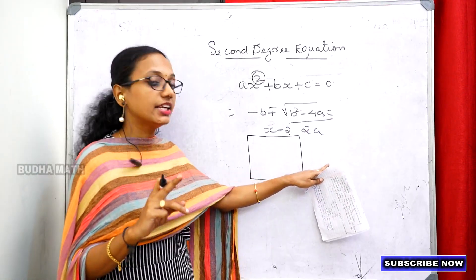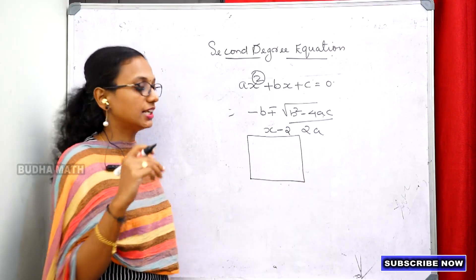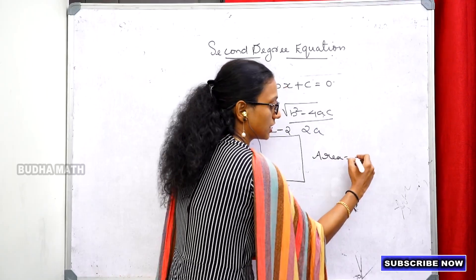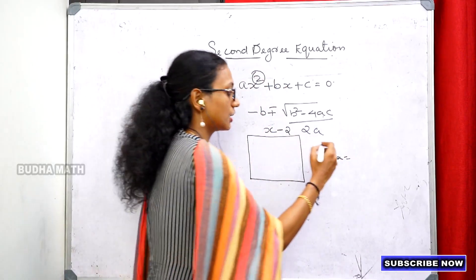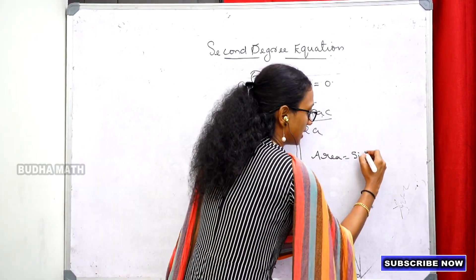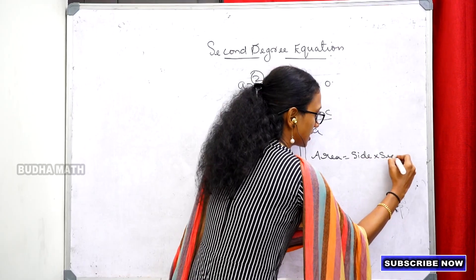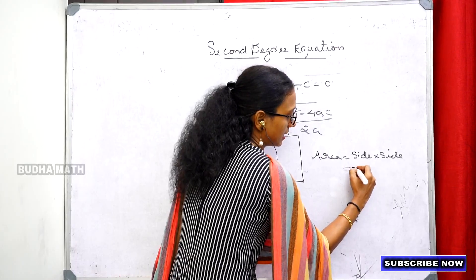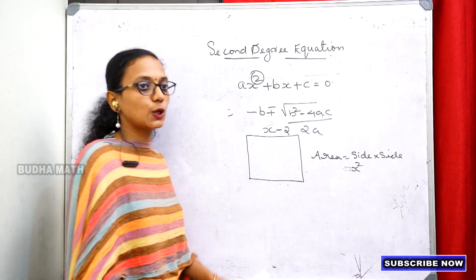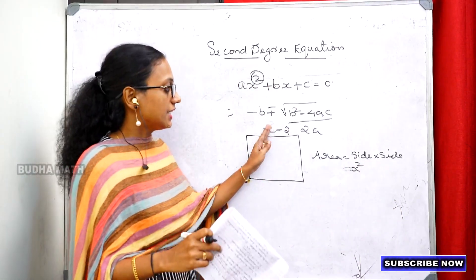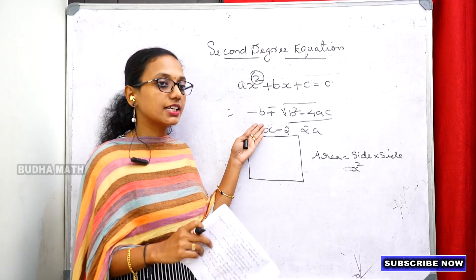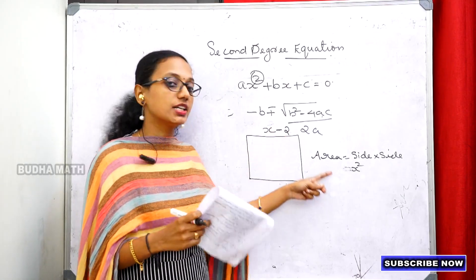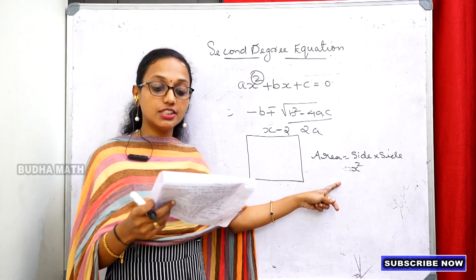The area of a square is side times side. So x minus 2 times x minus 2 equals 49. That means (x minus 2) squared equals 49.